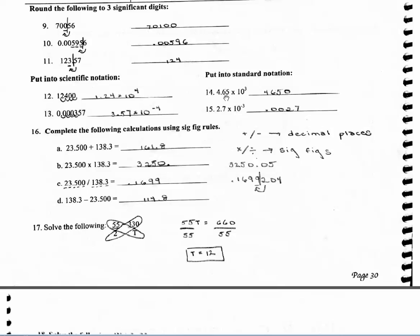For standard notation, since I have a positive exponent, that tells me I'm going to need to make this number larger, so I move my decimal place three places to the right to get this answer. For this one, since it's a negative exponent, I've got to move it three places to the left to make it a smaller value.